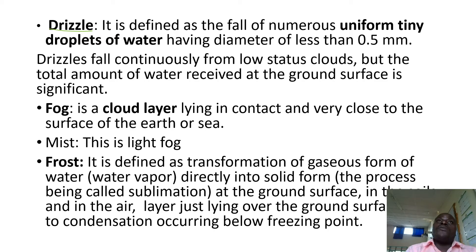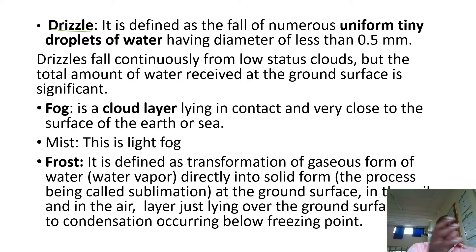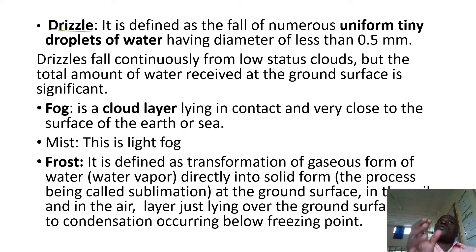The drops or particles of drizzle are very small and tiny compared to those of rainfall. Sometimes when you look at the atmosphere, you see drizzle particles as if they are floating in the atmosphere, but they keep on falling slowly. At the end of the day, you find much water has been collected on the surface.